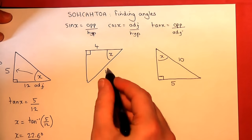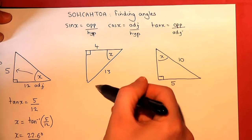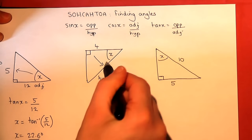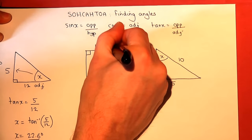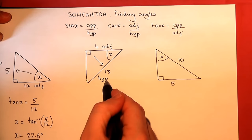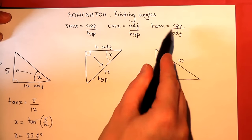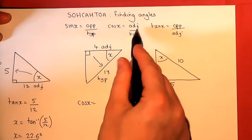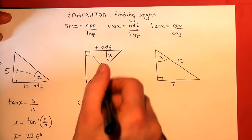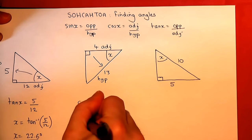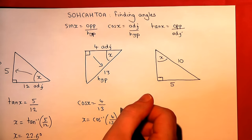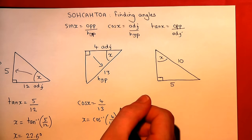The second question — we know two different sides. One of them is the hypotenuse because it's opposite the right angle. The other side is not opposite the angle, so it's the adjacent. We know adjacent and hypotenuse, so we use the cos ratio. Cos of x equals adjacent over hypotenuse, which is 4 over 13. To find x, we do the inverse cos of 4 over 13, and we get 72.1 degrees.